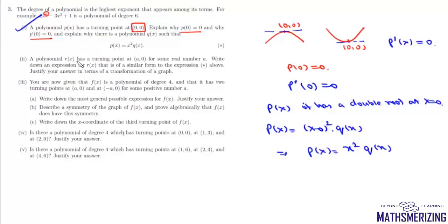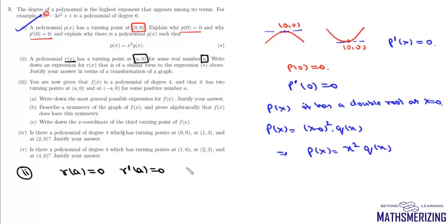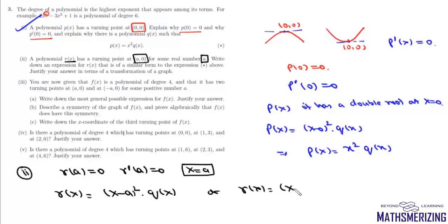In the second part, a polynomial r(x) has a turning point at (a, 0) for some real number a. We need to write down an expression for r(x) similar to the one above. Since there is a turning point at (a, 0), r(a) = 0, so x = a must be a double root. Therefore we can write r(x) as (x - a)²·q(x), or equivalently as (x - a)²·q(x - a).